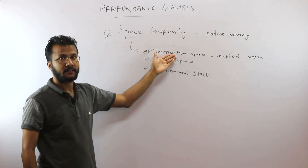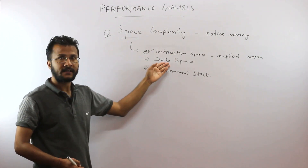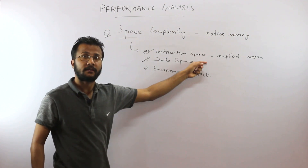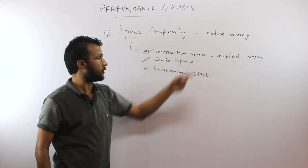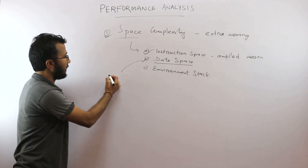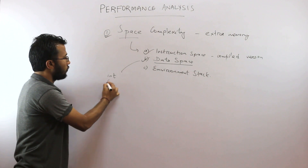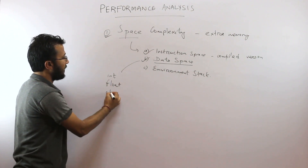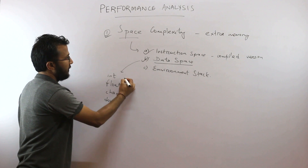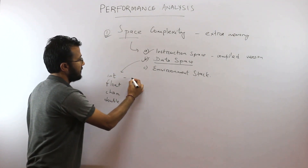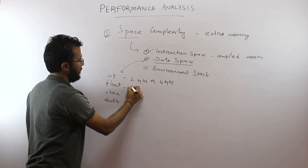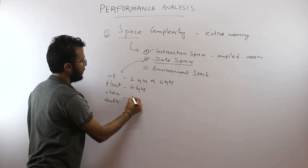Data space is the amount of memory contributed by all the variables in your program or algorithm. There are various inbuilt data types in any programming language — for example, in C you have int for integers, float for floating point numbers, char for characters, double, and so on. In C, int may take either two or four bytes, float takes four bytes, and char is one byte.